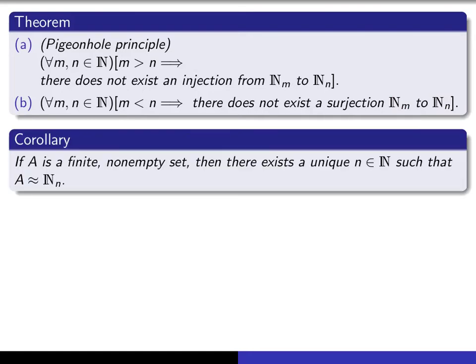But as a corollary of this, you get that if A is any finite non-empty set, then there must be exactly one n such that A is equivalent to N sub n. There can't be more than one. And this is easy enough that I think I'll just show you the proof of that fact.